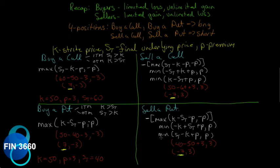This confirms that these are zero-sum games: if we know the payoff from buying a particular option, we automatically know the payoff from selling that option. When we buy a call we're betting the price goes up; when we buy a put we're betting the price goes down.